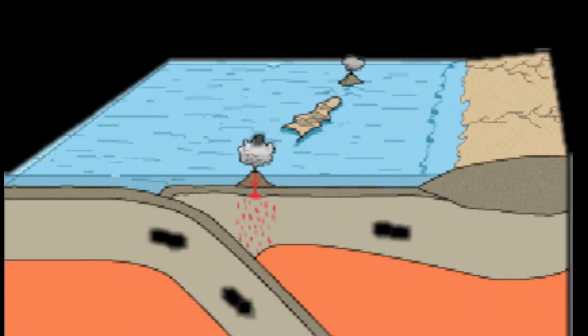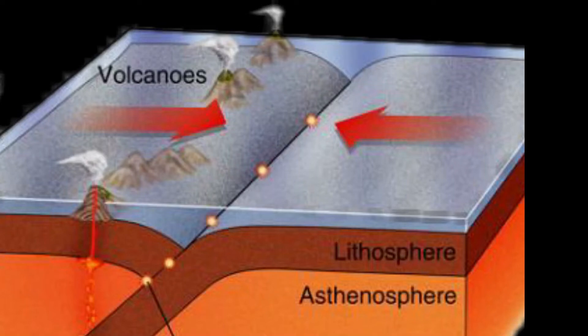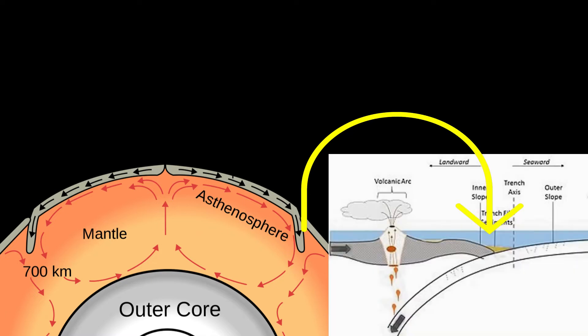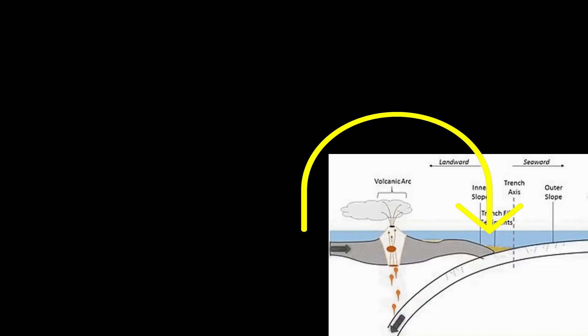The model shows two crusts underwater, so they are both oceanic crusts. You must have noticed that there is a boundary line between the crusts — a trench. It is a crack on the crust which is underwater.